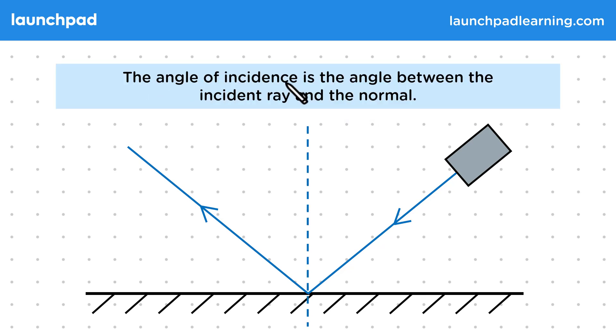Well, the angle of incidence is the angle between the incident ray and the normal. So for this example, the angle of incidence would be this angle here. We normally label it using the letter I.